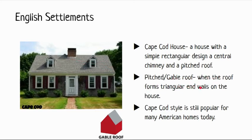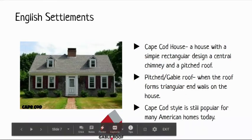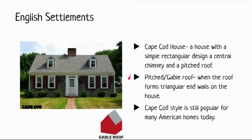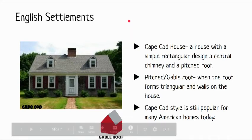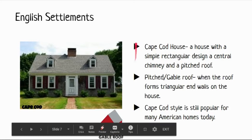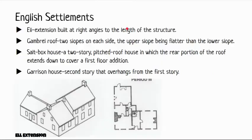The pitched roof forms triangular ends with walls on each side — essentially a gable roof. Looking at the front of the house, the triangle appears at the top. In the diagram, the red section shows the front of the house and the gray section shows where the roof forms those triangular ends.